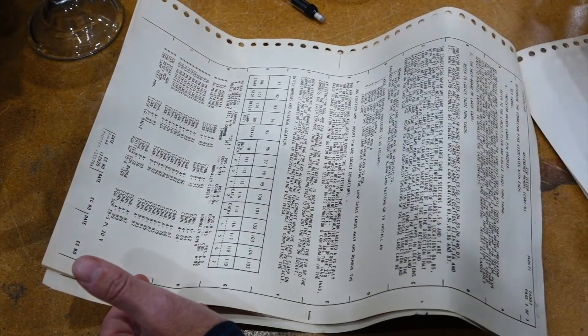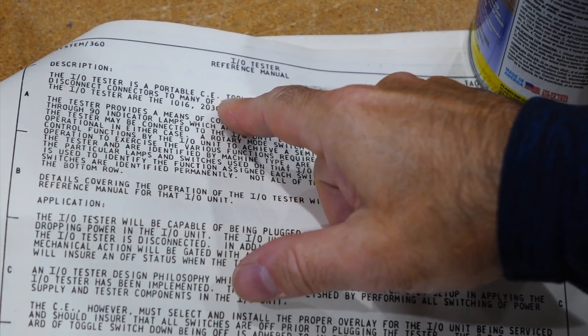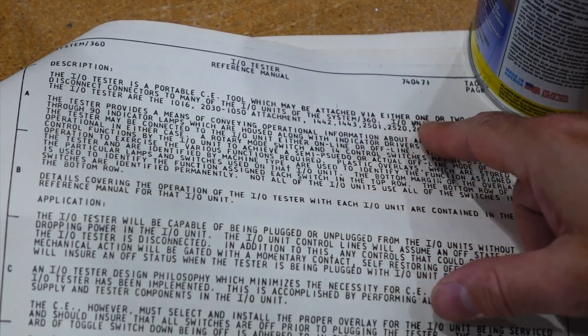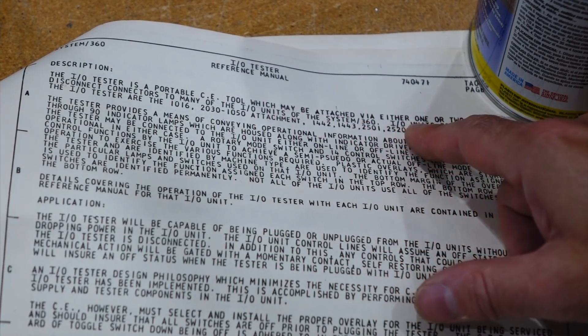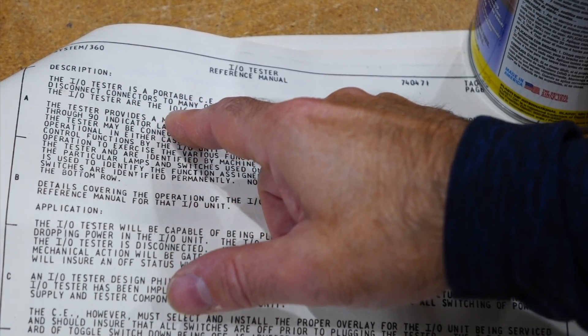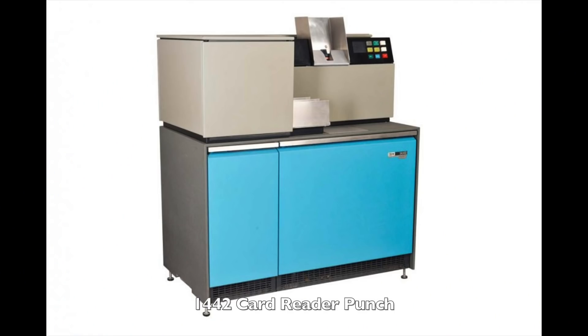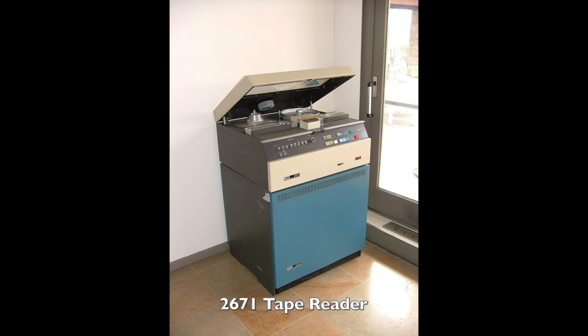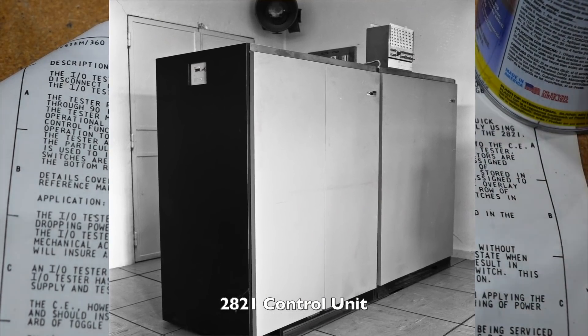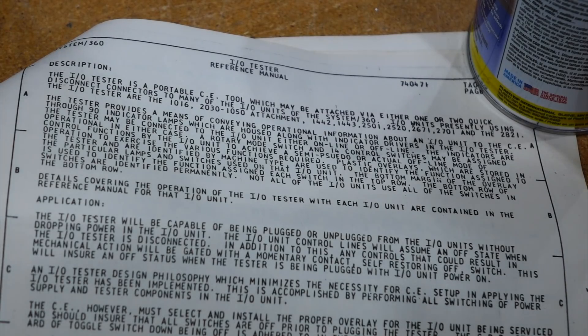A little explanation manual tells you right here. The IO tester is a portable CE tool, which may be attached via either one or two quick disconnect connectors to many of the IO units of the system 360. IO units presently using the IO tester are the 1016, the 2330-1050 attachment, 1442, 1443, 2501, I have that one, 2520, 2671, 2701, and the 2821. And they kept adding more. And this thing was kept around all the way to the IBM 370 era, the late 70s.